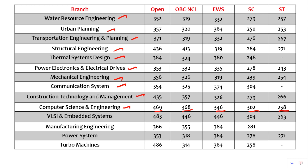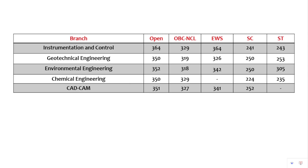For VLSI and Embedded Systems, the cut-offs are 483 for Open, 446 for OBC, 446 for EWS, 304 for SC, and 263 for ST. Other branches include Manufacturing Engineering, Power Systems, Turbo Machines, Instrumentation and Control, Geotechnical Engineering, Environmental Engineering, Chemical Engineering, and CAD/CAM. These are all the branches provided by SVNIT Surat. You can pause the video and go through the cut-offs for each and every branch as per category.